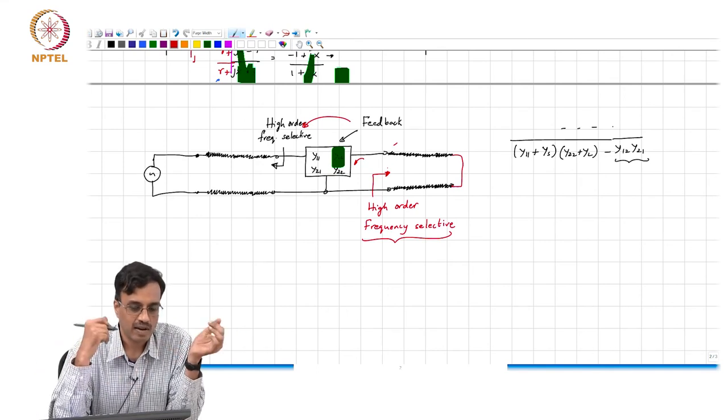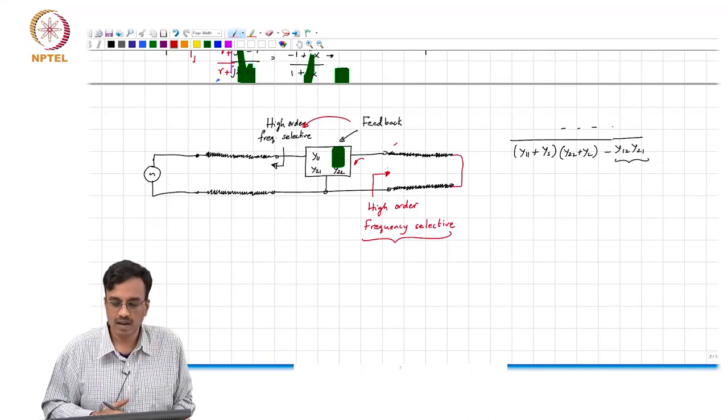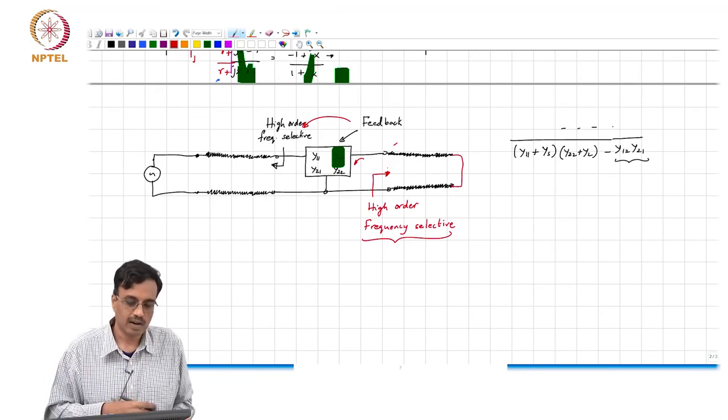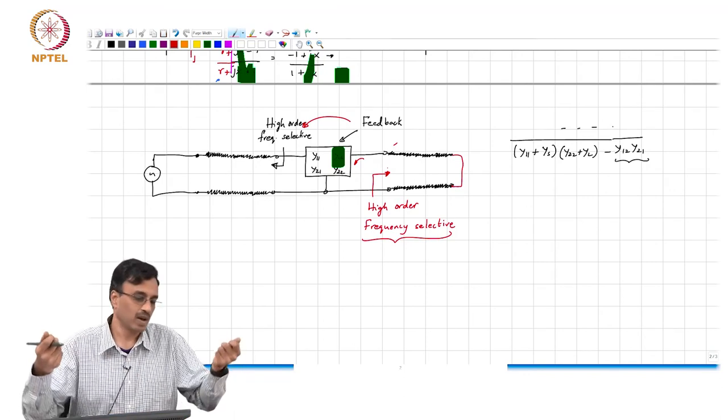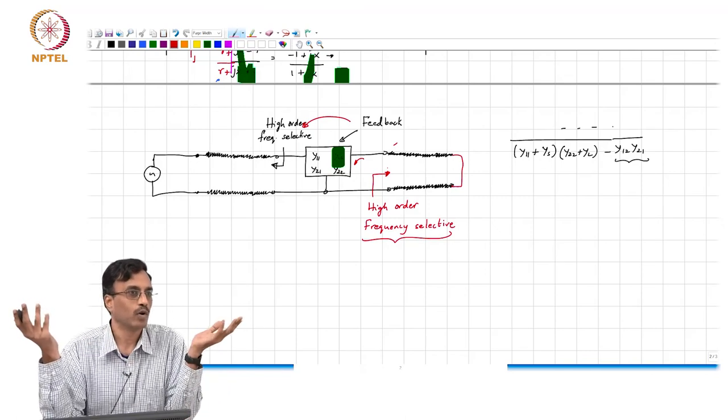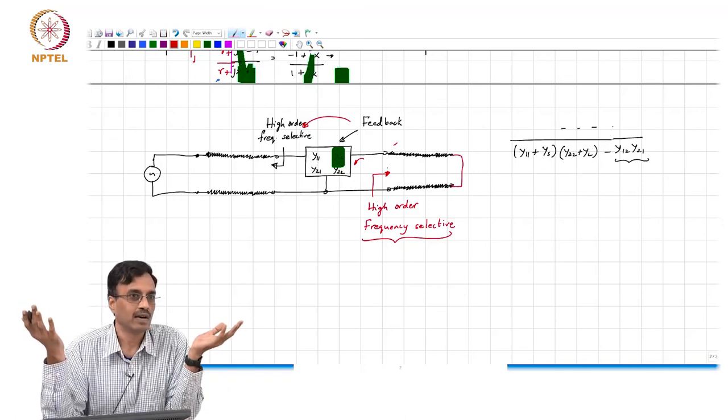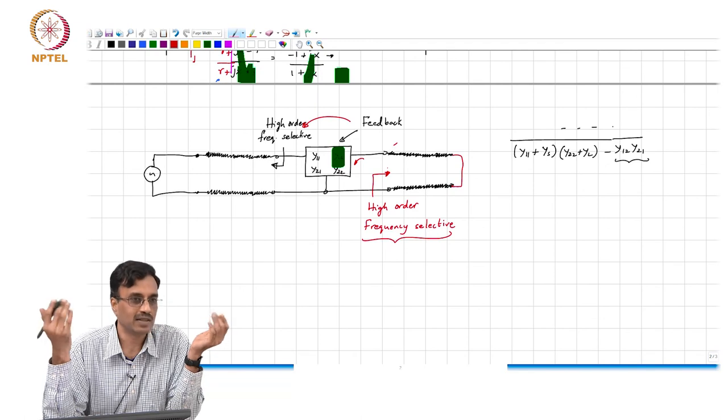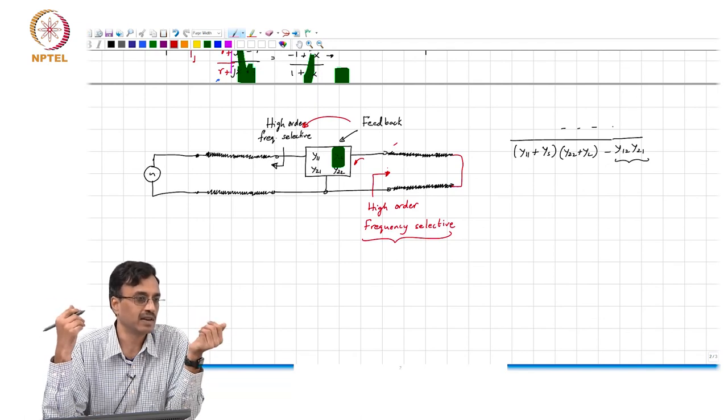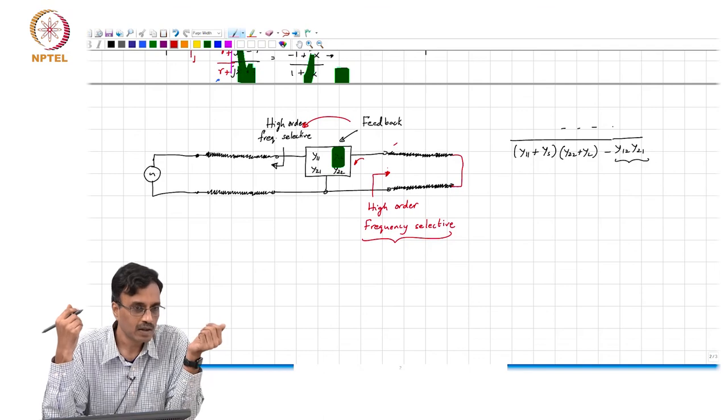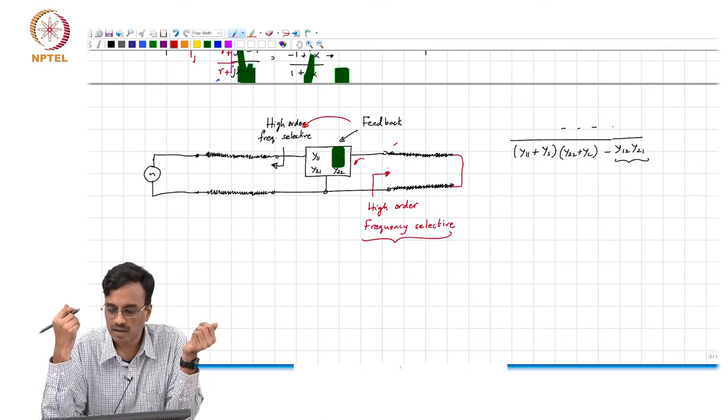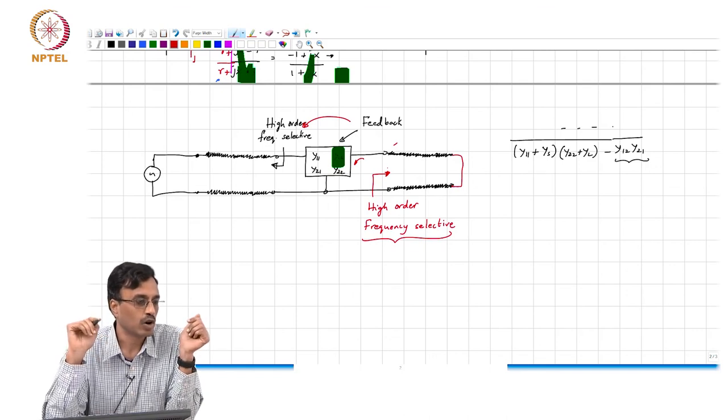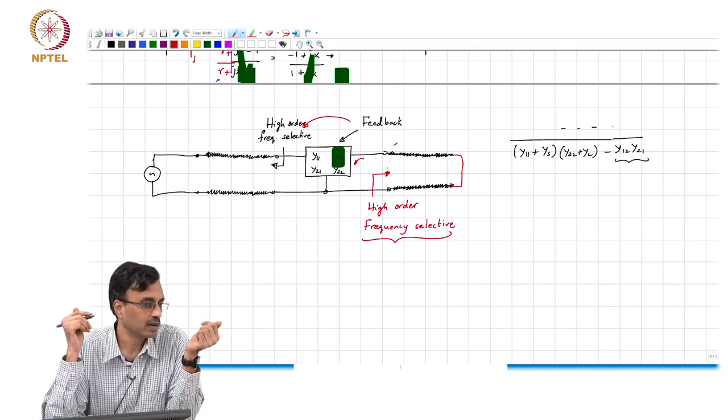When people try to measure active devices at high frequencies and try to use cables and then say ok I am going to short the end of the cable, they found out that oh well all their transistors, the whole system is oscillating right. Sometimes things are dangerous because the oscillation amplitude can become so large that a lot of heat is generated in the device and the device burns up. So trying to terminate the transmission line with a short or an open circuit is basically the recipe for disaster.